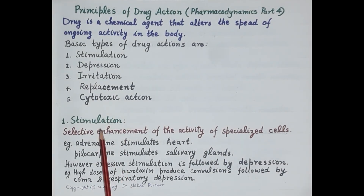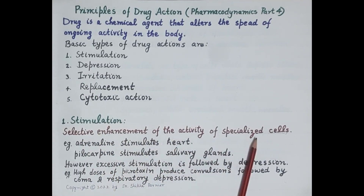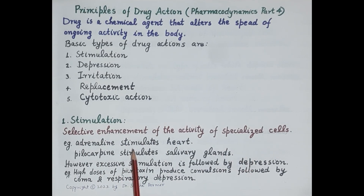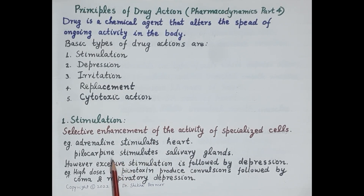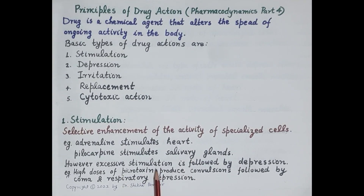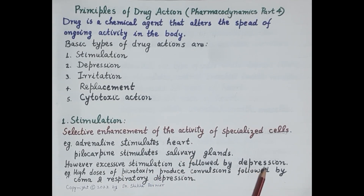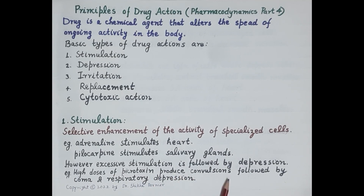The first drug action is stimulation — selective enhancement or increase in the activity of specialized cells. For example, adrenaline stimulates the heart, increases heart rate, and increases force of contraction of cardiac muscles. Another example is pilocarpine, which stimulates the salivary glands. One important note: if a system is excessively stimulated, excessive stimulation is followed by depression. For example, picrotoxin, a CNS stimulant — high doses produce convulsions followed by coma and respiratory depression.